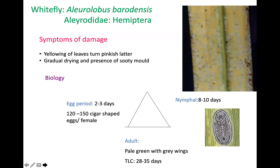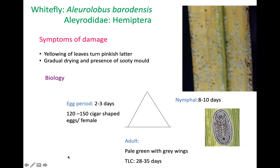Another important pest is the sugarcane whitefly — Aleurolobus barodensis. Its family is Aleyrodidae, order Hemiptera. This scientific name is important as it is frequently asked in NET and other exams. Symptoms of damage include yellowing of leaves turning pinkish later, gradual drying, and presence of sooty mold. Adults are pale green with gray-white wings. Females lay 120 to 150 cigar-shaped eggs, and nymphal stages complete in 8 to 10 days.